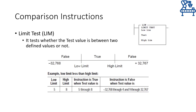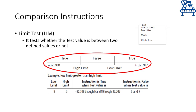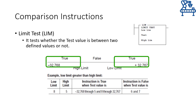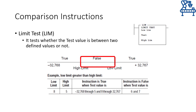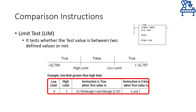The limit test instruction requires you to specify a low limit and a high limit, then checks whether the test value is between them. For a 16-bit processor, the low limit can be as small as negative 32,768 and the high limit as high as 32,767. For example, if the low limit is 5 and the high limit is 8, the instruction returns true if the test value is between 5 and 8, otherwise false. Conversely, you can set the high limit lower than the low limit. In that case, the instruction outputs true if the test value lies outside the range between the high and low limits.